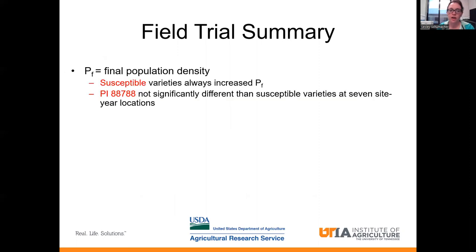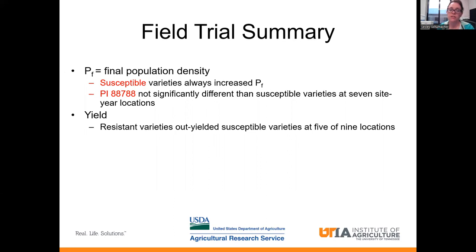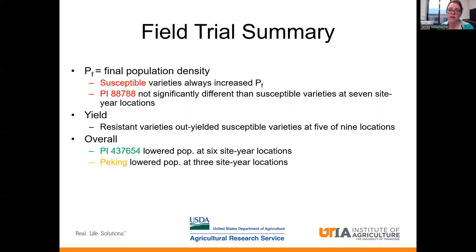For this field trial, I want to summarize what I found. The susceptible varieties always increased the final population density of soybean cyst nematode. The PI-88788 was not significantly different than the susceptible varieties at seven of those nine locations. In terms of yield, our resistant varieties out-yielded the susceptible varieties at five of the nine locations. Our source of resistance deriving from the PI 437654 lowered that population density at six of the locations. The Peking or 548402 lowered the population density at three of the site-year locations. And the 88788 only lowered the population density at one of the locations.